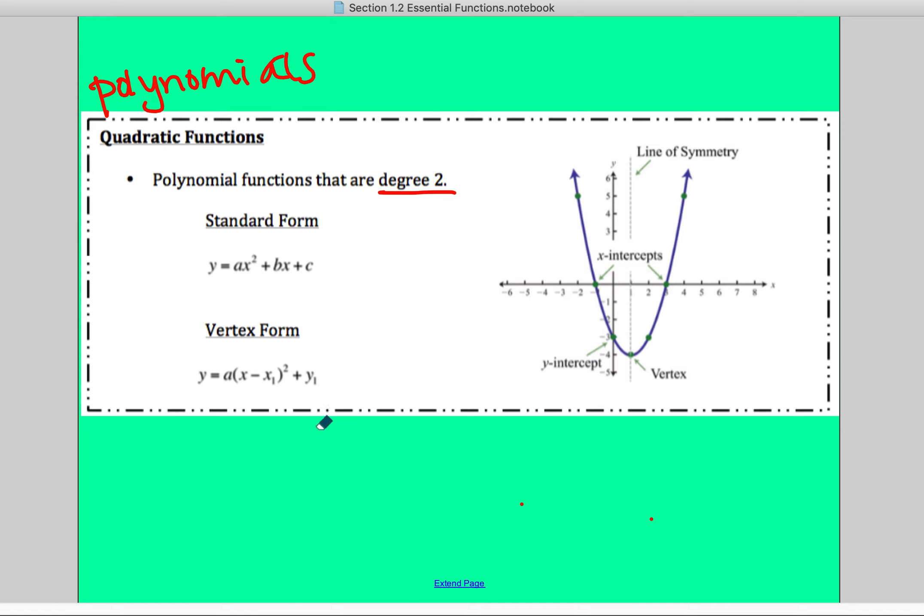To be in vertex form, this tells you your vertex of your quadratic. It's your vertex is x1 comma y1, and your vertex is always located right here.